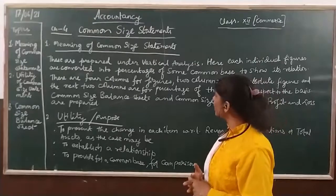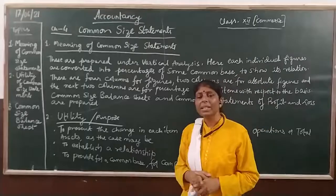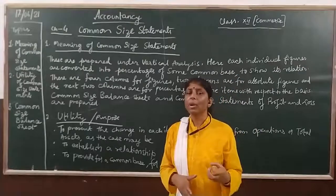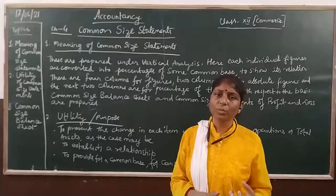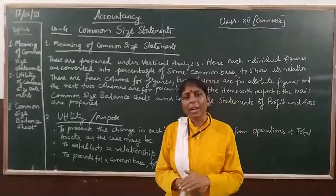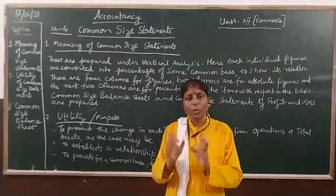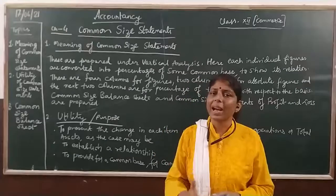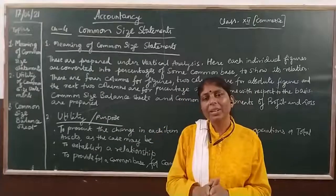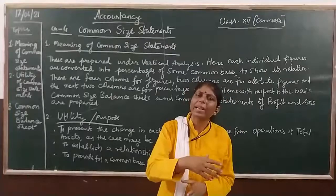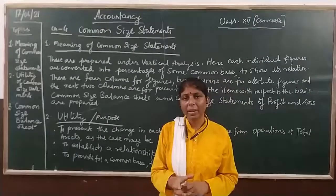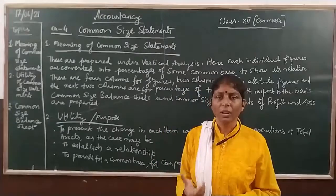Individual figures are converted into percentages of some common base. When we talk about the statement of profit and loss, the common base is revenue from operations. Revenue from operations means the income you get from your regular day-to-day main business — not side business. Other income goes under the 'other income' heading. Revenue from operations is the basis for the statement of profit and loss.